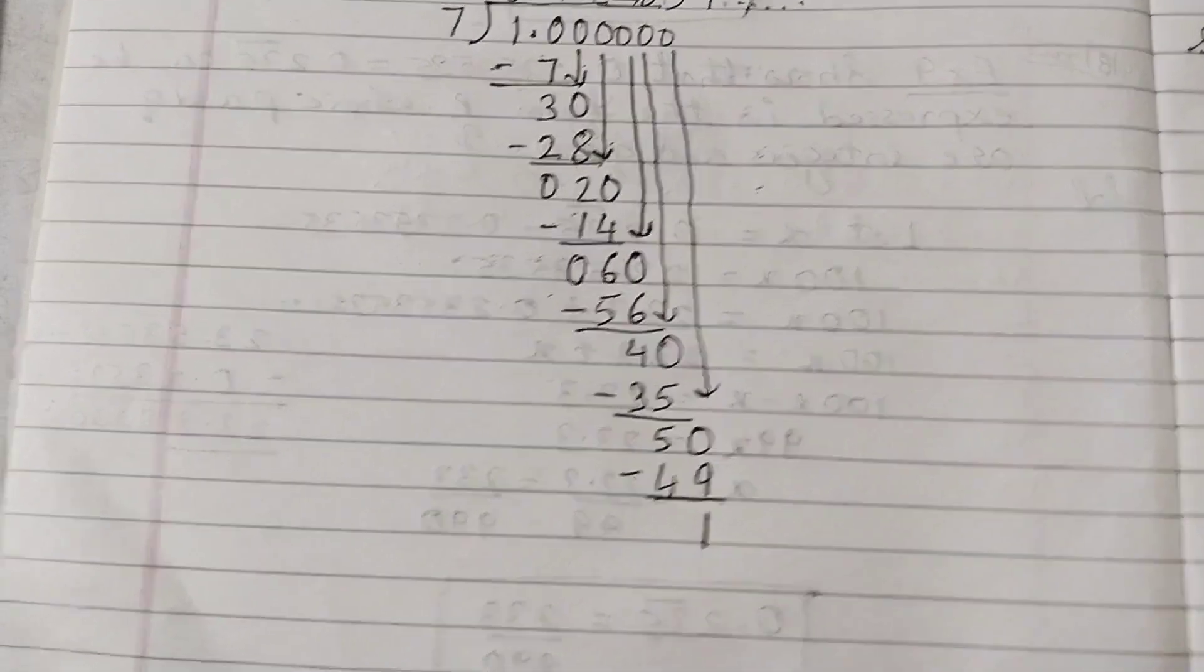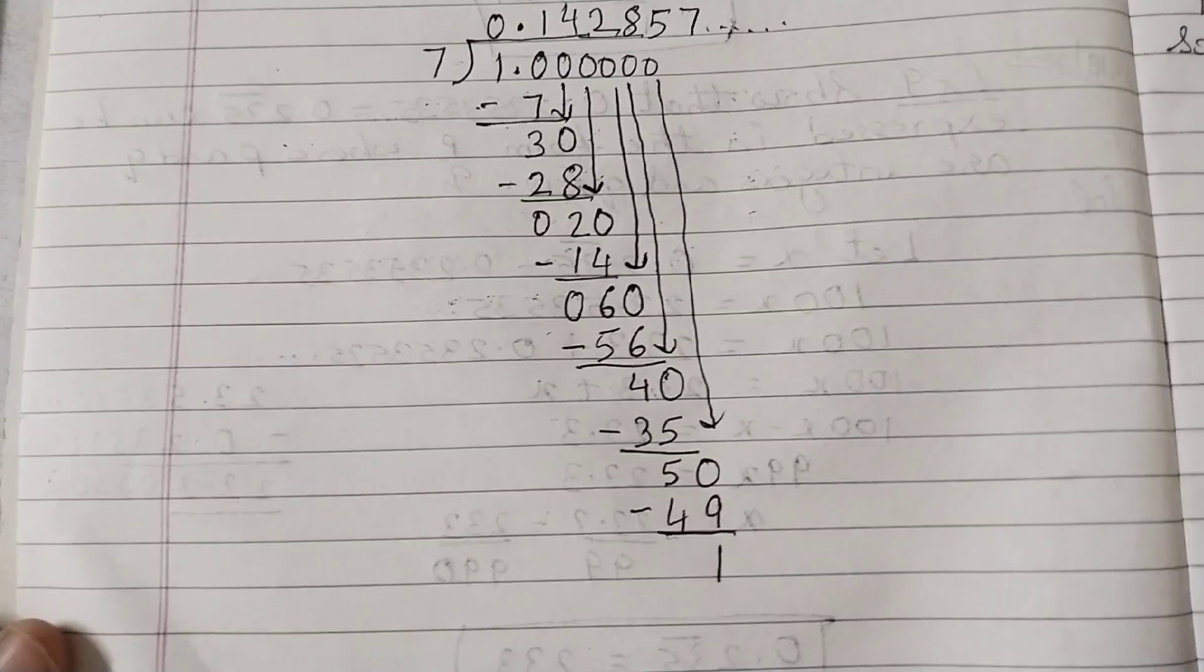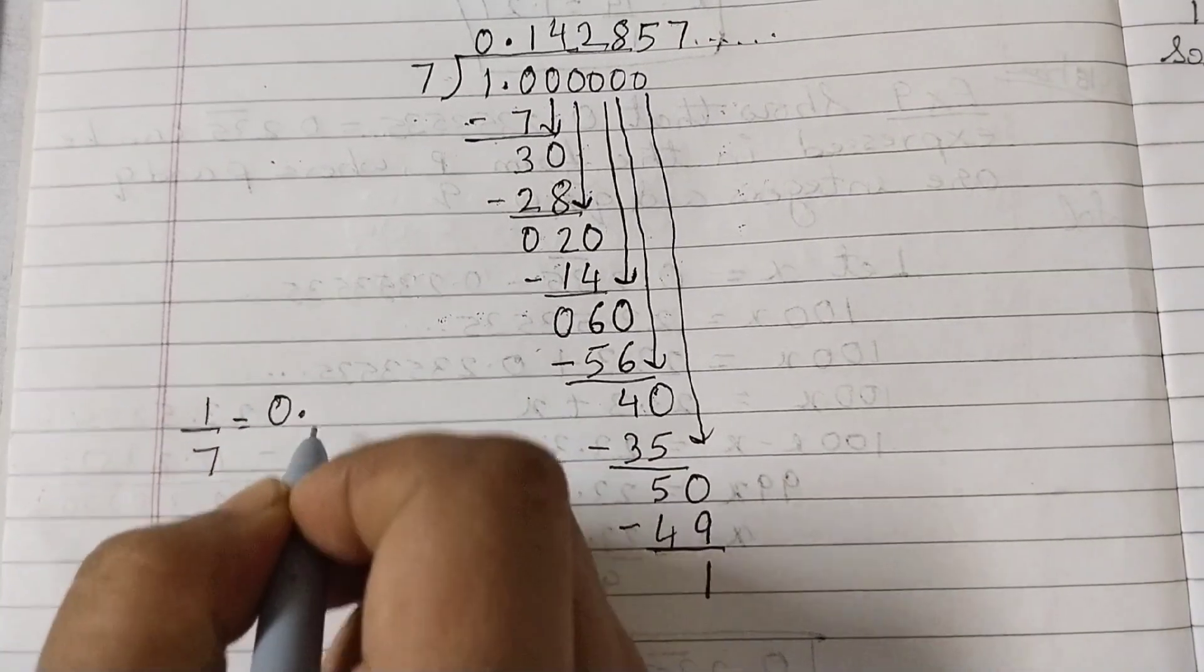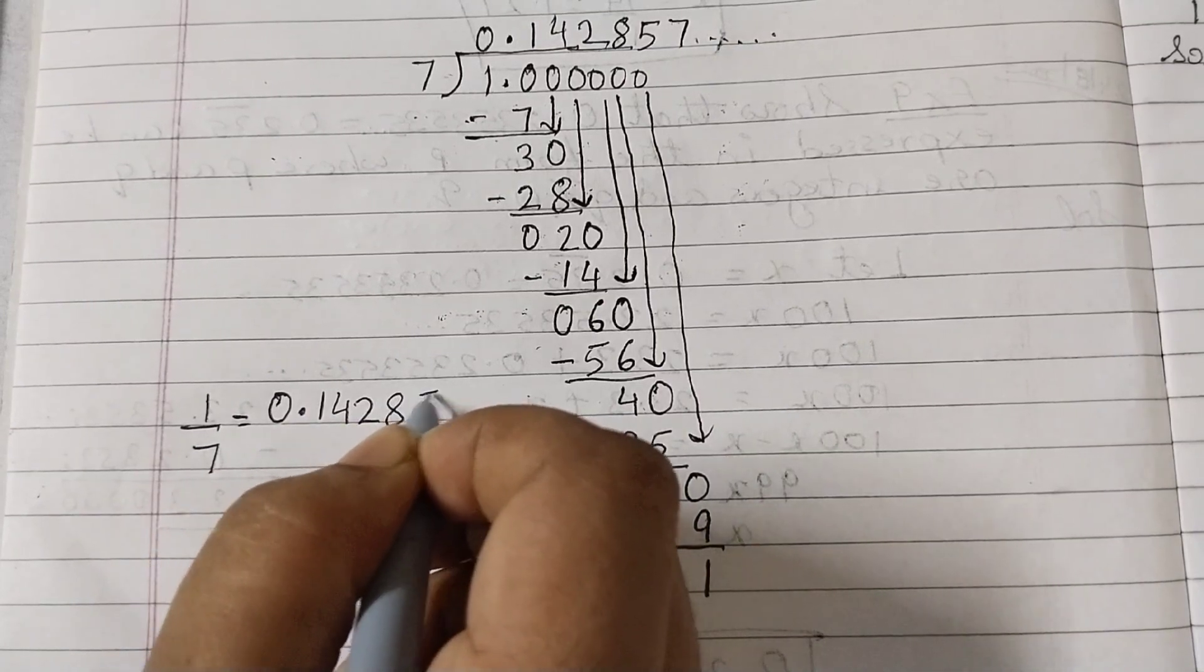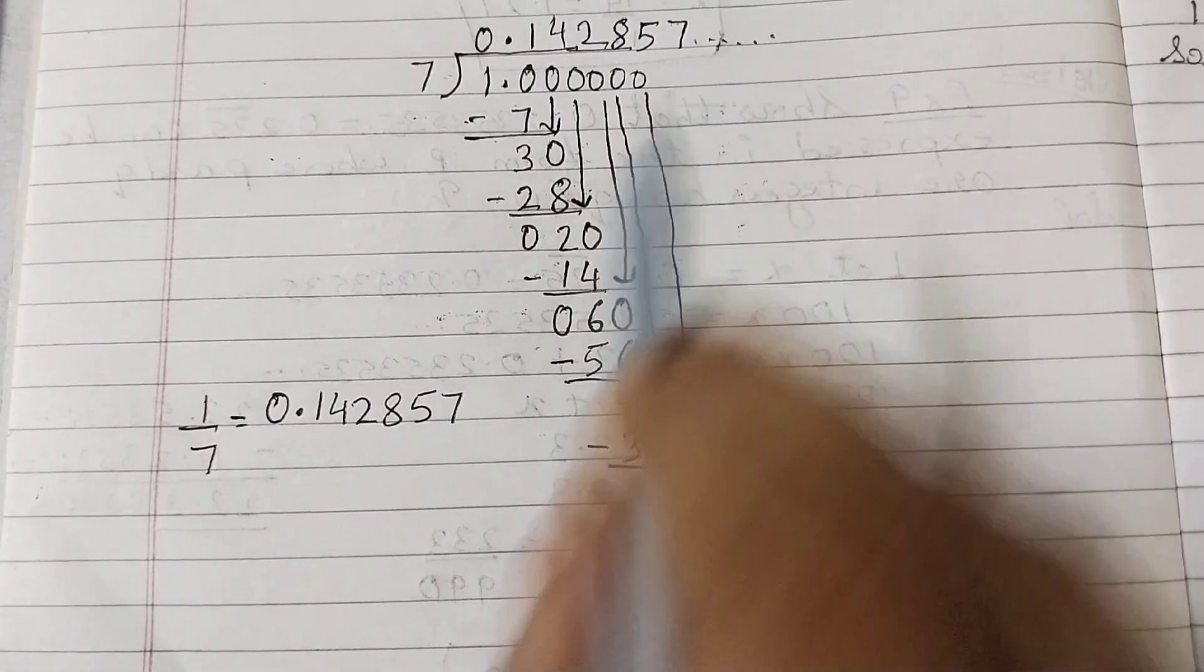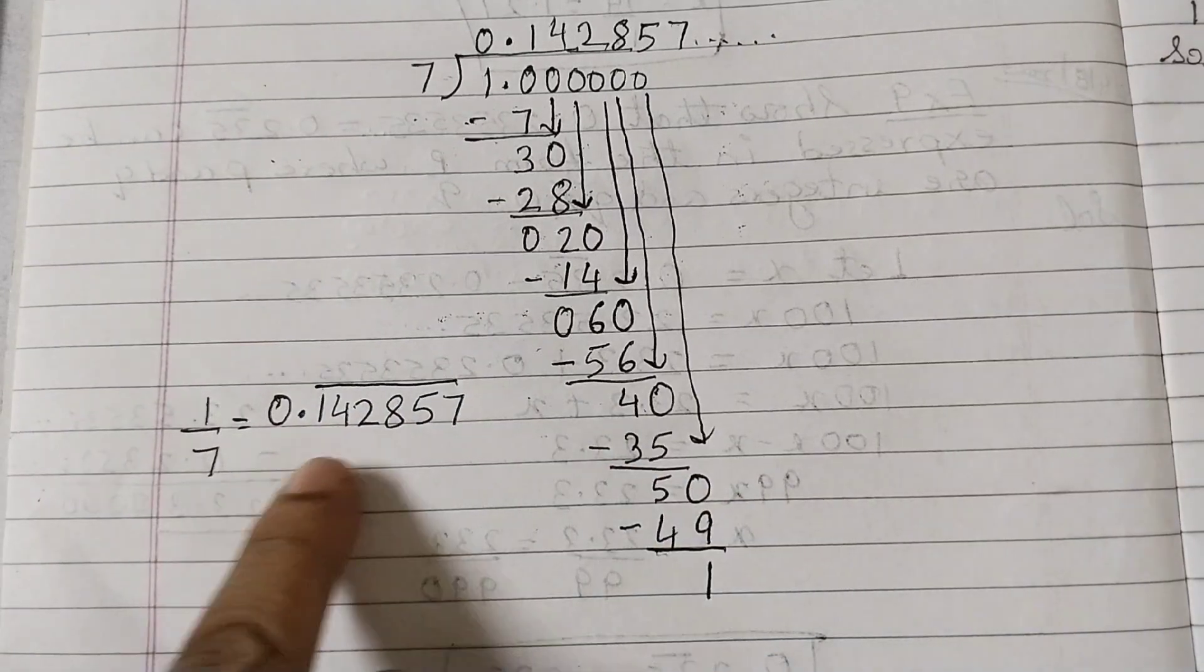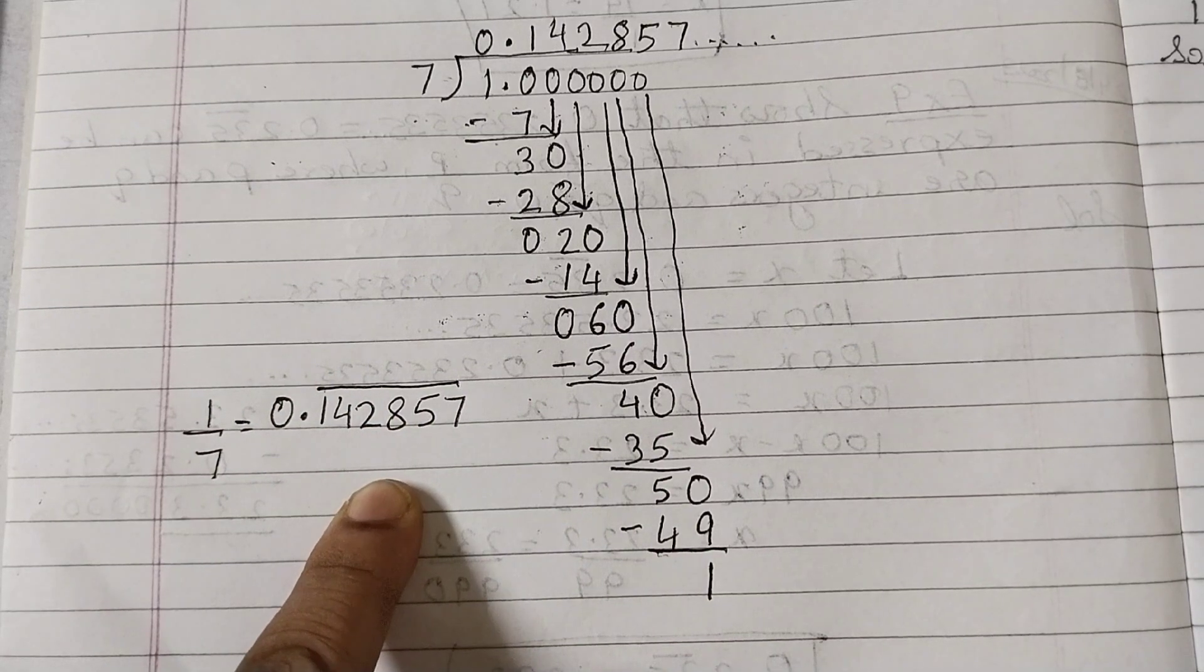We can write the decimal expansion of 1 by 7 as 0.142857, and you can put dot, dot, dot to show that it repeats itself, or you can put a bar on all these 6 digits, showing that the 6 digits would repeat itself.